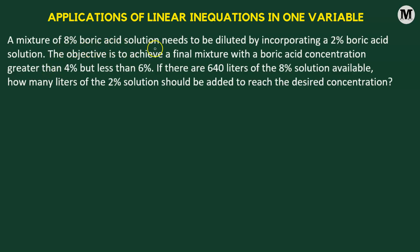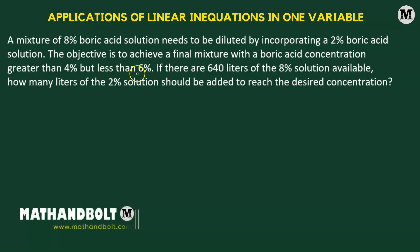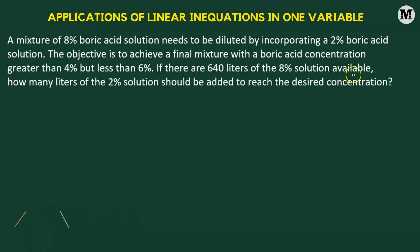A mixture of 8% boric acid solution needs to be diluted by incorporating a 2% boric acid solution. The objective is to achieve a final mixture with a boric acid concentration greater than 4% but less than 6%. If there are 640 liters of the 8% solution available, how many liters of the 2% solution should be added? We will consider x liters of 2% boric acid solution added to the 640 liters of 8% boric acid solution.